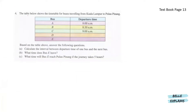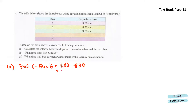Lastly for number 4, the table below shows the timetable for buses travelling from Kuala Lumpur to Pulau Penang. Based on the table above, answer the following questions. Calculate the interval between departure time of one bus and the next bus. So for number 4A, here we have bus C minus bus B, that will be 9.00 a.m. minus 8.30 a.m., so we have 30 minutes. From bus B to bus A, we have 8.30 a.m. minus 8.00 a.m., that will also give us 30 minutes.